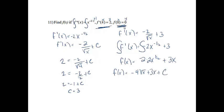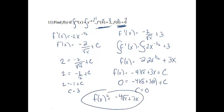And then I will use this information, f of 0 equals 0. So my function equals 0, and my x value equals 0, which means c will equal 0. So my final answer will be f of x equals negative 4 square root of x plus 3x. And that would be my answer.